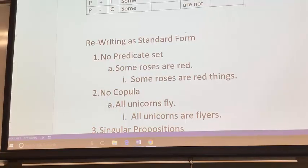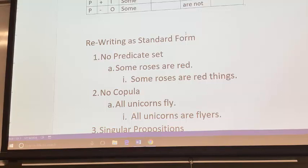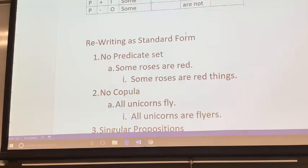So far we've been dealing with categorical statements in the so-called standard form. The standard form is not very normal English — statements like 'no X's are Y's' or 'some creatures who wander through the woods at night are not mischievous werewolves.' That's not how people normally write or speak. So what if we have ordinary statements that form categorical arguments or logical relationships and we want to know if they're valid? We can translate or convert or rewrite ordinary statements into standard forms.